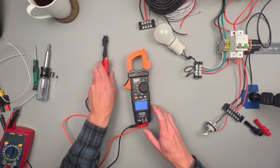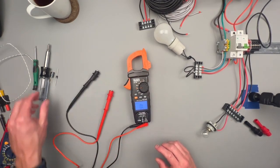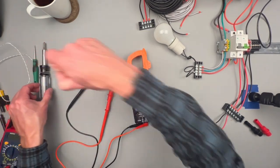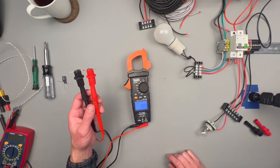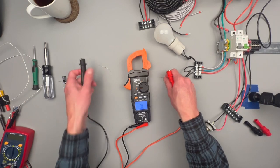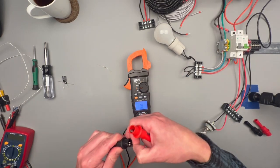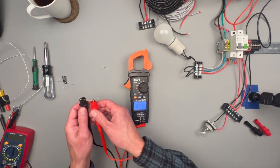If we press the selection button again, it'll go to an auto-ranging resistive measurement. Should be a 10 ohm resistor. 10, 10.1. Let's try. This should be a 47k. 47k ohm we're getting there.